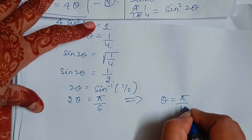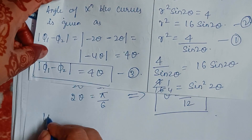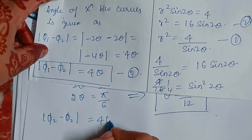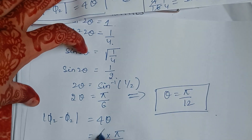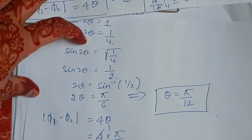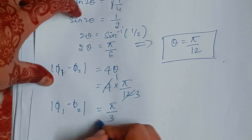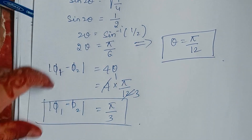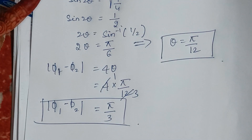From equation 3, the angle of intersection is 4θ = 4 × (π/12) = π/3. So the angle of intersection is π/3. Thank you for watching — if you liked this video, share it with your friends, subscribe, like, and comment any doubts below.